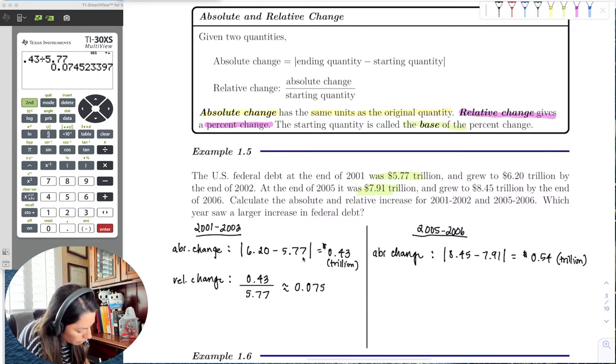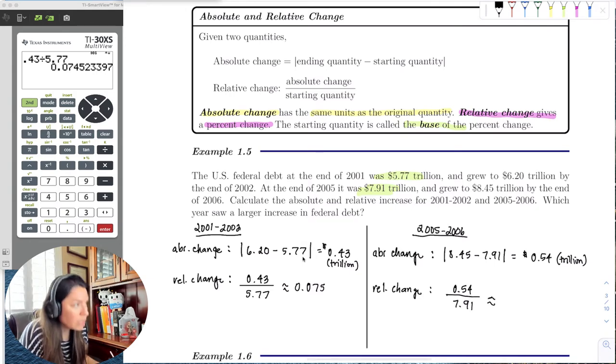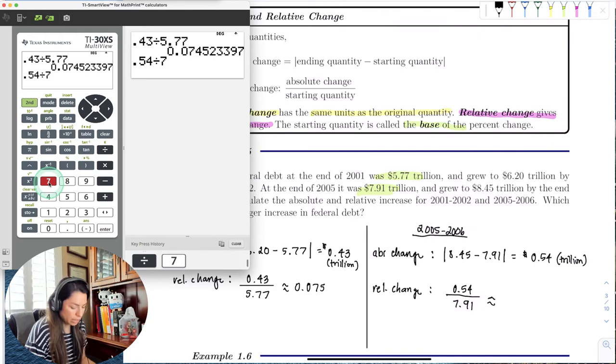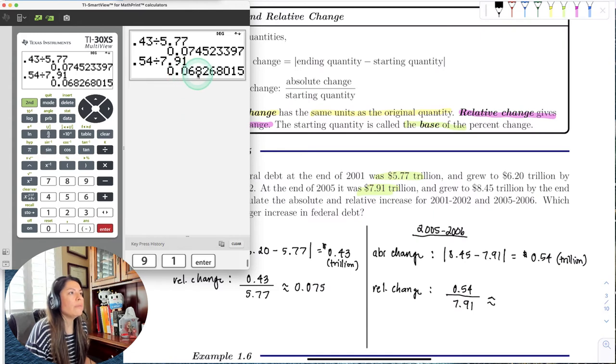All right, so now let's do it for the next year they give us, which is 2005-2006. So the absolute change was 0.54 and we divide that by the original amount, which is 7.91. So let's go back to the calculator. We'll have 0.54 divided by 7.91. And here we can round to three decimal places again so that it's at the 8. So the test digit would be the digit right to the right of it, which is 2. That's less than 5, so we just keep it the same, so 0.068.